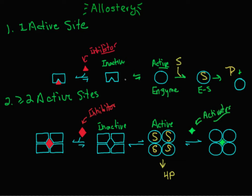When you have two or more active sites, this form of allostery is called cooperativity, because when the substrate binds it changes the affinity. In positive cooperativity, binding increases the affinity of the substrate for the remaining sites.